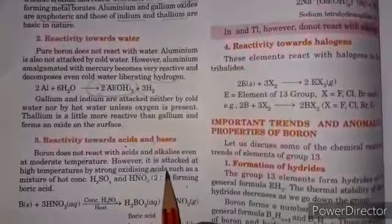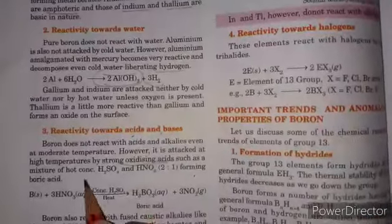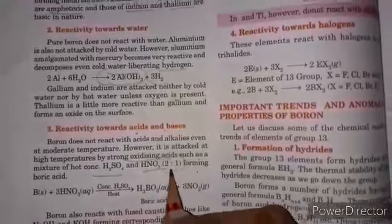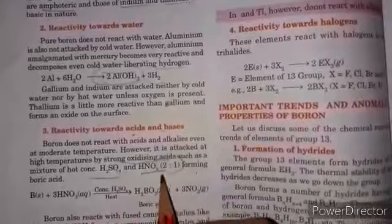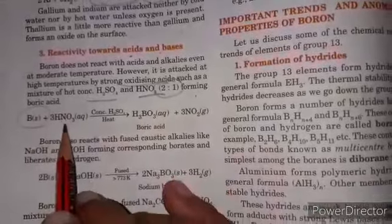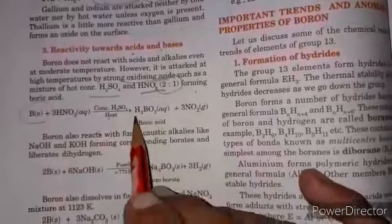Boron is attacked by a strong oxidizing agent which is a mixture of two strong acids: hot concentrated sulfuric acid and nitric acid in ratio 2:1 (two parts sulfuric acid and one part nitric acid) to form boric acid. When boron reacts with nitric acid along with hot concentrated sulfuric acid it gives boric acid along with nitrogen dioxide.